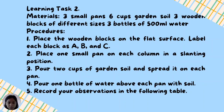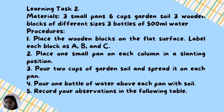For Learning Task Number 2, materials needed: three small pans, six cups of garden soil, three wooden blocks of different sizes, and three bottles of 500 ml water. Procedures — Number 1: Place the wooden blocks on a flat surface and label each block A, B, and C. Number 2: Place one small pan on each block in a slanting position. Number 3: Pour two cups of garden soil and spread it on each pan. Number 4: Pour one bottle of water above each pan with soil and record your observations in the table. You may use other materials if you do not have what is listed.